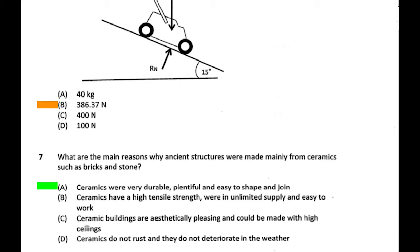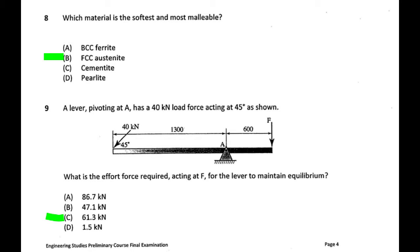They don't have high tensile strength - they have terrible tensile strength but good compressive strength. 'Aesthetically pleasing' is not a reason we typically give in engineering. Question eight is hard: if we remove austenite, ferrite is pretty soft, pearlite is harder, cementite harder still. But austenite exists at around 780-900 degrees, and at that temperature the metal is very soft. The answer is B - austenite is the softest.